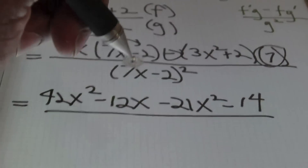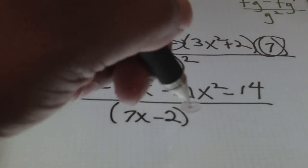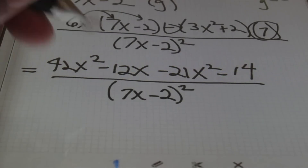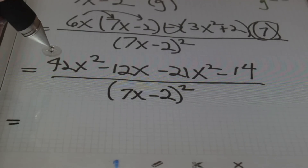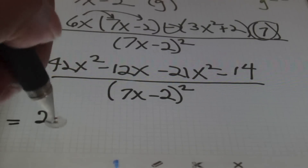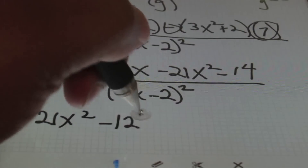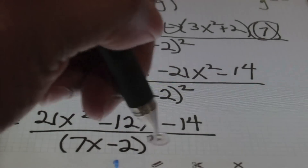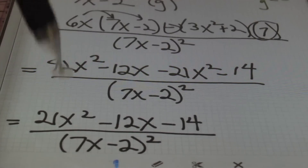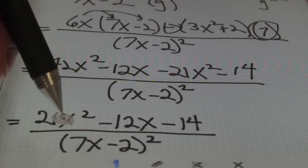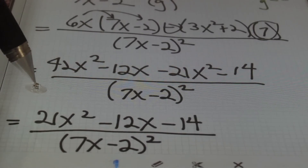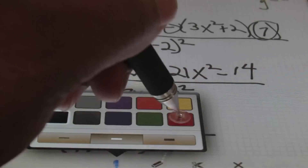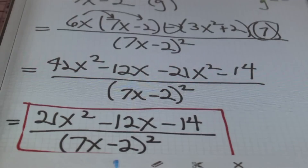My final step is to simplify as much as possible by combining like terms. In the numerator: 42x squared minus 21x squared gives me 21x squared, then bring down negative 12x minus 14. So I have 21x squared minus 12x minus 14, all over (7x minus 2) squared. I would try to factor the numerator and see if there are common factors with the denominator. In this case, 21x squared minus 12x minus 14 does not factor into anything that simplifies further, so this is the final answer.